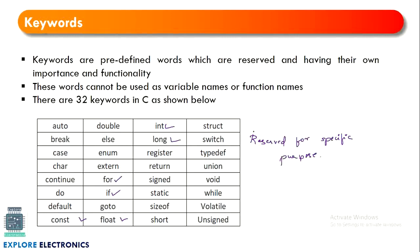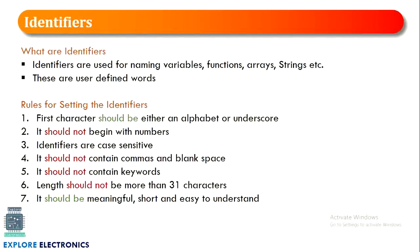Let's take an example: int x = 12. Here int is a keyword, and x is the name given to the variable. Instead of x, you cannot use any of the reserved keywords — keywords are reserved, and 12 is the value being assigned. Coming to identifiers, these are the names we use for a function, variable, array, or string. These are user-defined words and must be other than keywords.